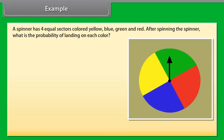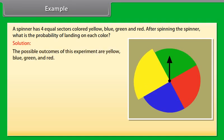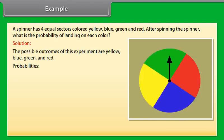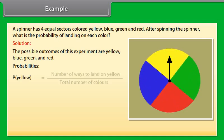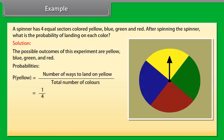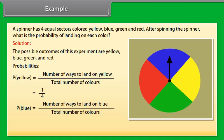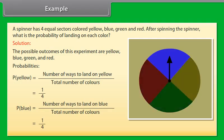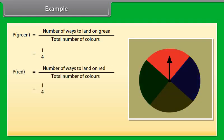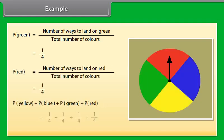Example: A spinner has four equal sectors colored yellow, blue, green and red. After spinning the spinner, what is the probability of landing on each color? Solution. The possible outcomes of this experiment are yellow, blue, green and red. Now let's find the probabilities. Probability of landing yellow is number of ways to land on yellow by total number of colors, that is equal to 1 by 4. Probability of landing blue is number of ways to land on blue by total number of colors, that is equal to 1 by 4. Similarly, we will find the probability for green and red. And if we add all these probabilities, we will get 1.